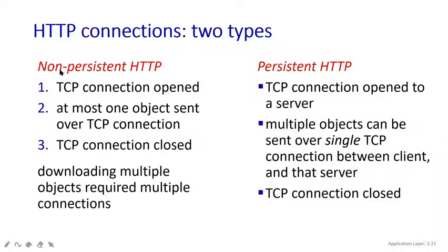In summary, we learned about two types of HTTP connections: non-persistent HTTP and persistent HTTP. In non-persistent HTTP, both client and server can establish a TCP connection, but in persistent, only the server builds the TCP connection. In non-persistent, only one object is sent over the TCP connection, but in persistent, multiple objects are sent using a single TCP. In non-persistent, once TCP is closed, you need multiple connections to download files, but in persistent, multiple files or objects are already downloaded before the TCP connection closes.